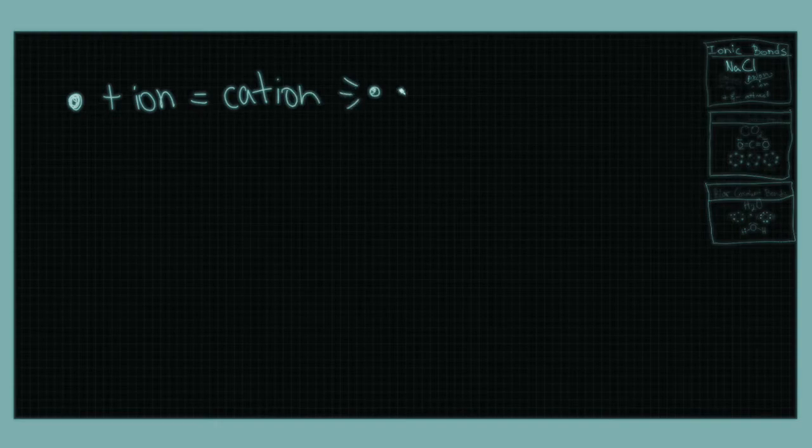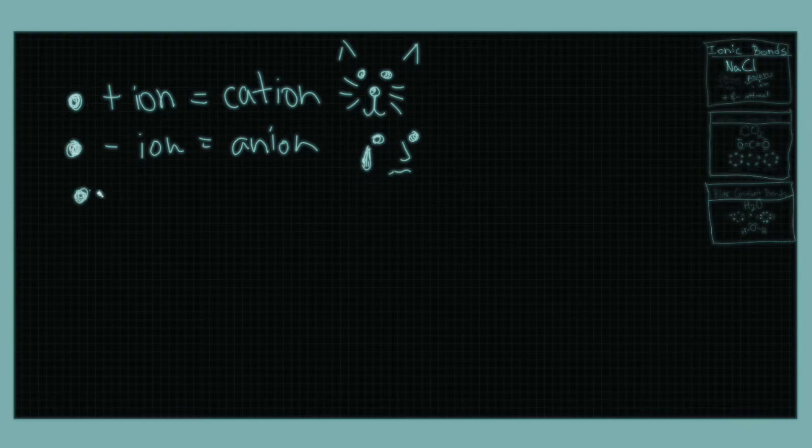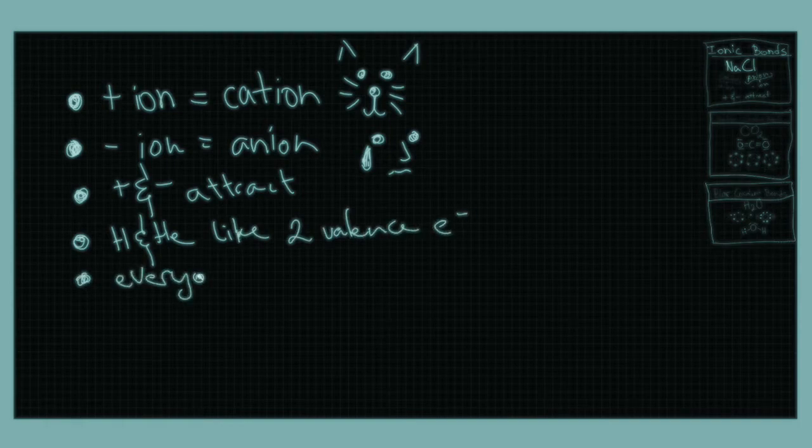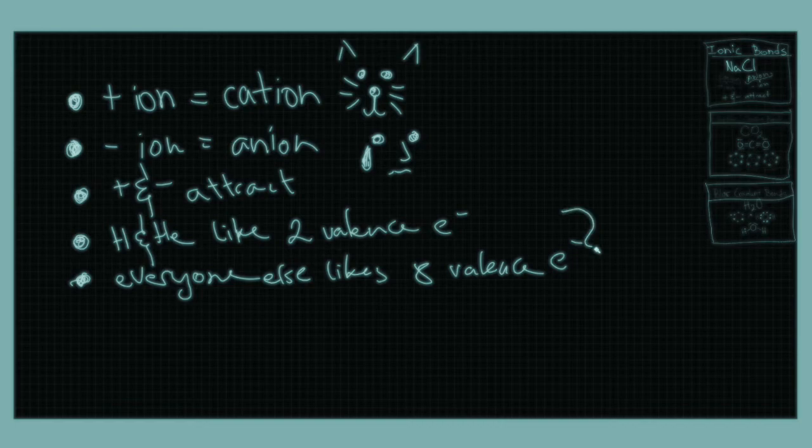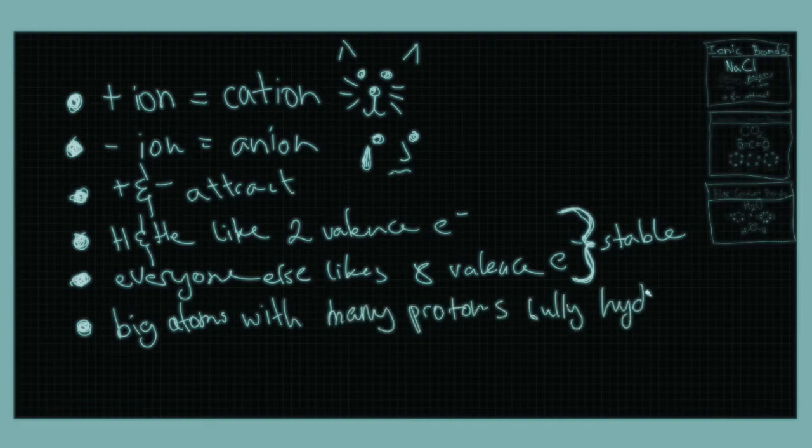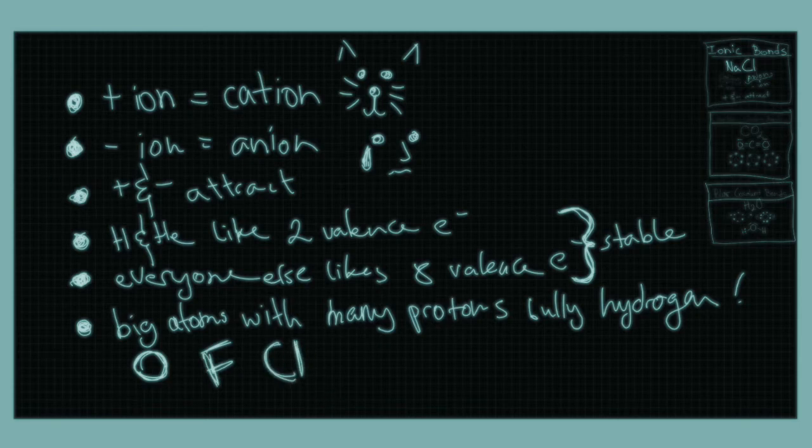And here are some important points to keep in mind. Positive ions are called cations because cats are nice and make us feel positive emotions. Anions make us cry like onions and crying is a negative emotion. H and He, hydrogen and helium, want two valence electrons. Most atoms like eight to be stable. Big atoms like O, F, and Cl—oxygen, fluorine and chlorine—bully hydrogen, because he's small and tiny.